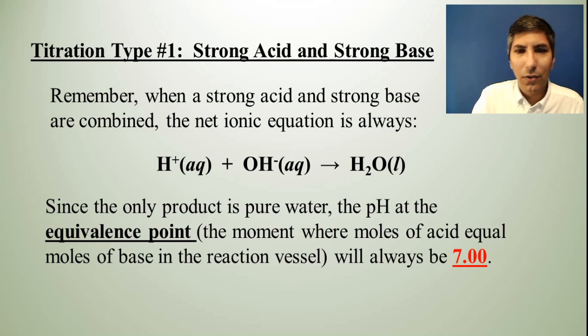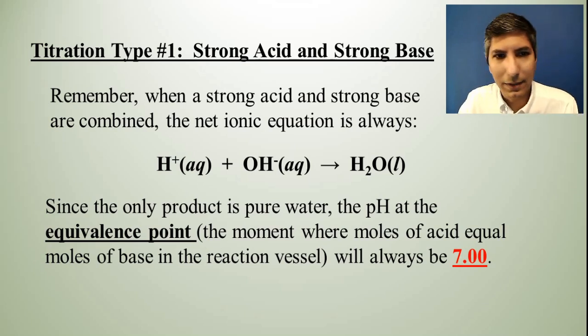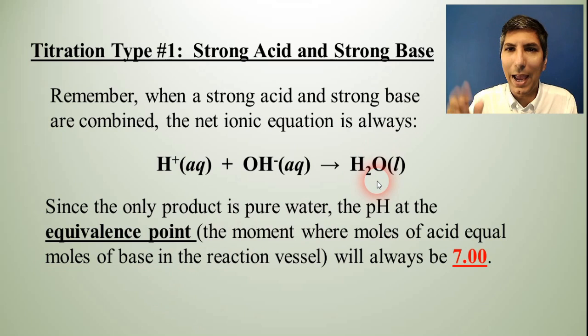Now don't forget that there's only really one product here. The product and the only product is pure water in its liquid form. So that means that the pH at the equivalence point, that's the point where the moles of acid equal moles of base, will always be seven as long as you're at 25 degrees Celsius. That's the equivalence point at that temperature. So it'll be seven.